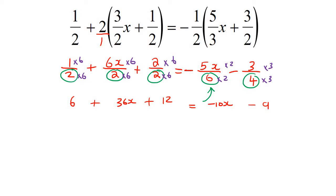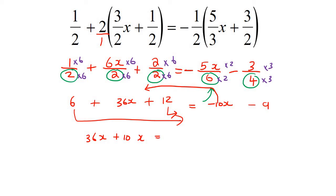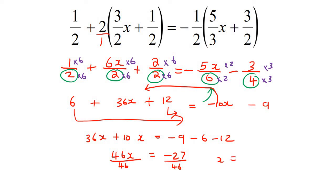Now we just do the normal stuff. I'm going to bring all the variables over to the left and take all the numbers over to the right. On the left-hand side we'd have 36x plus 10x, and on the right-hand side we'd have minus 9, minus 6, and minus 12. On the left it's 46x, and on the right that's minus 27. To get x alone, divide this side by 46 and divide this side by 46, so x equals minus 27 over 46 — and if you try to simplify that, you'll find it cannot be simplified any further.